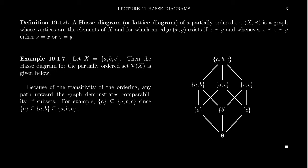We call this a Hasse diagram. Because of this, we draw the small elements on the bottom and the big elements on the top. The idea is that as you go up the edges, the inequalities are going in that direction. So when you go up the diagram, that's how we say that that element is bigger than another. Let me present some examples of a Hasse diagram as a visualization of the partially ordered set.